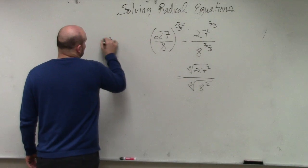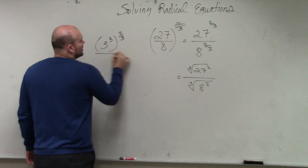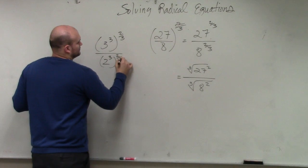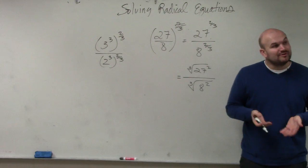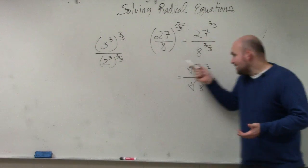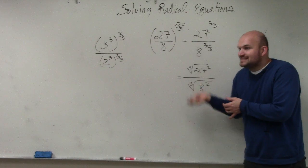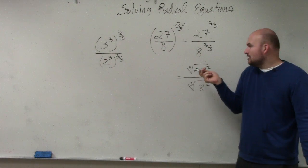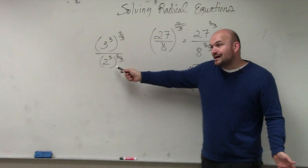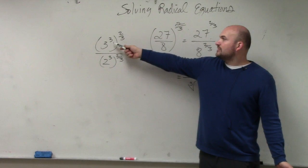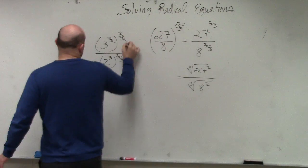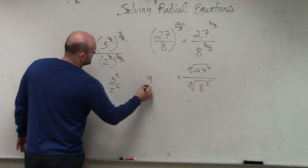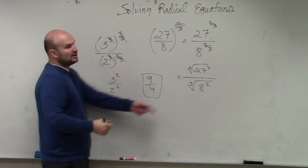So I could rewrite it as 3 cubed raised to the 2/3. And is 8 a cube number? By rewriting it like this, it doesn't matter if you do it this way or this way. But for this problem, if you don't have a calculator, why would you want to do 27 squared and then take the cube root? If you rewrite them as exponents, 3 cubed times 2/3 — the 3's cancel to 1 — so you're left with 3 squared over 2 squared, which gives you 9 over 4.